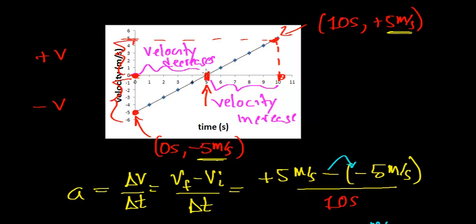After you hit five seconds and reach zero meters per second, the velocity actually changes direction. The velocity begins to go from zero to one meter per second, one meter per second to two meters per second. Now the acceleration and the velocity have the same sign, so the velocity is going to increase.